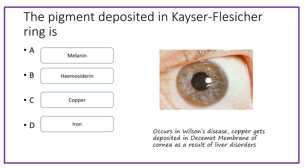Next question: the pigment deposited in the case of Fleischer ring is option A: melanin; option B: hemosiderin; option C: copper; option D: iron. The answer is copper, because it occurs in Wilson's disease. In Wilson's disease, copper gets accumulated as a result of liver disorders, and in the eye it gets accumulated in Descemet's membrane, which is called the Kayser-Fleischer ring.